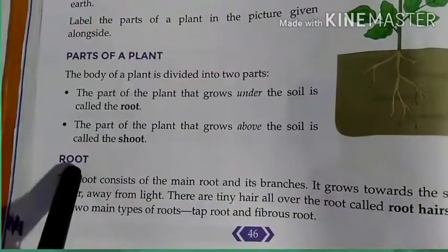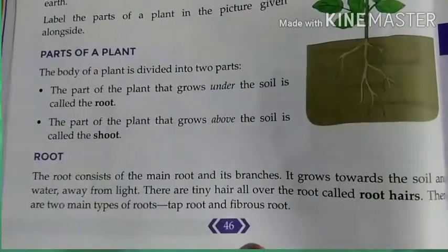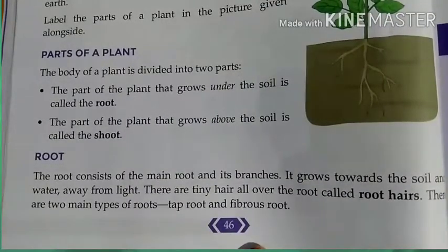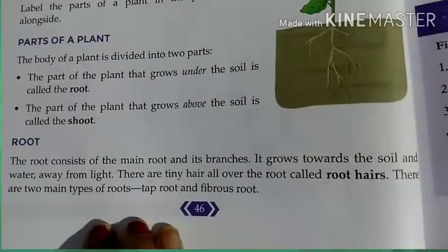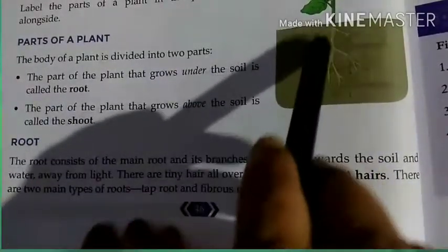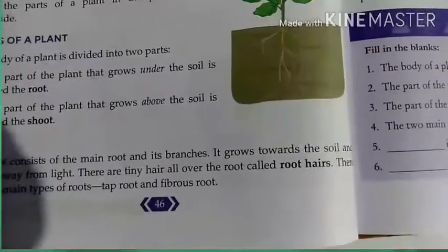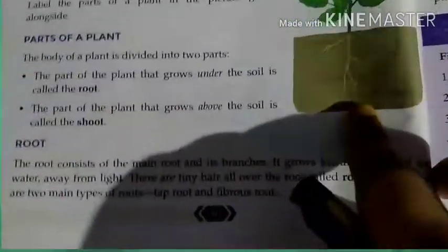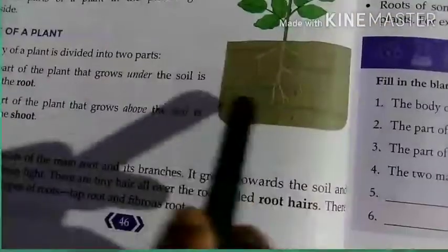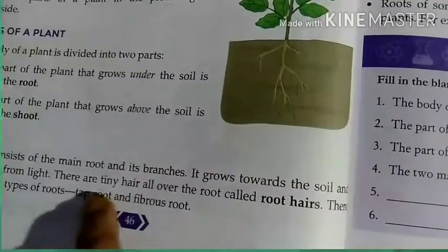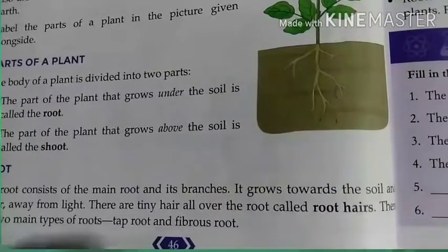Now let's study about the root. Root consists of a main root and its branches. It grows towards the soil and water. There are tiny hairs all over the roots — these are called root hairs. The main thick portion is called the main root, and the smaller branches are called root hairs.